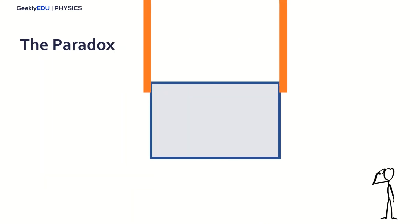So now we have a paradox. Because for observer A, who's outside the train, the train fits perfectly inside the tunnel — it disappears inside the tunnel. Now for observer B, it's bigger than the tunnel. So what's really happening? To test this, let's do some experiments here.